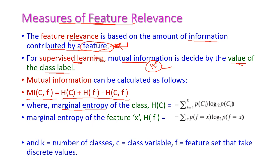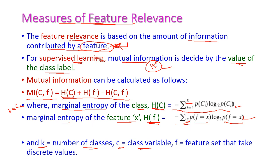The marginal entropy of class H(C) is equal to summation of i equal to 1 to K of P(Ci) log P(Ci). Similarly, the marginal entropy of feature X, H(F), is equal to minus summation over x of P(F=x) log P(F=x). Here K is the number of classes, C is the class variable, and F is the feature set that takes discrete values.